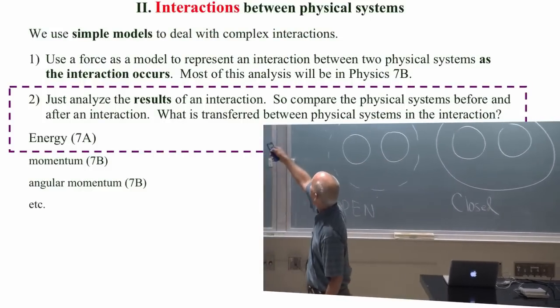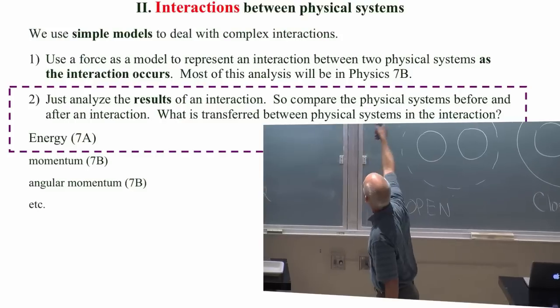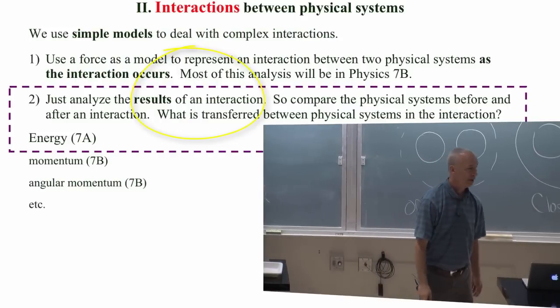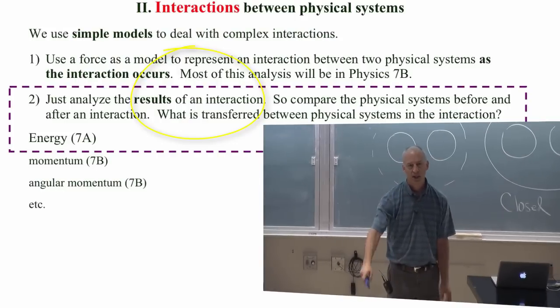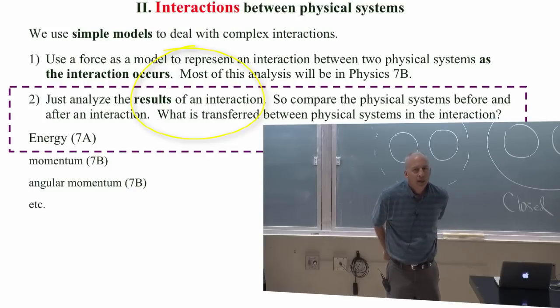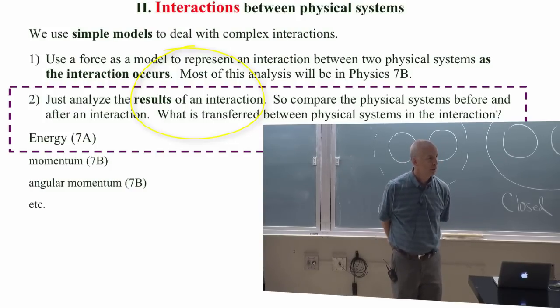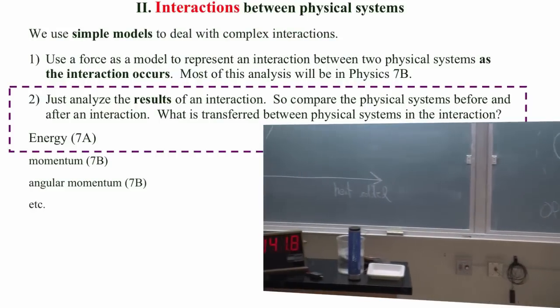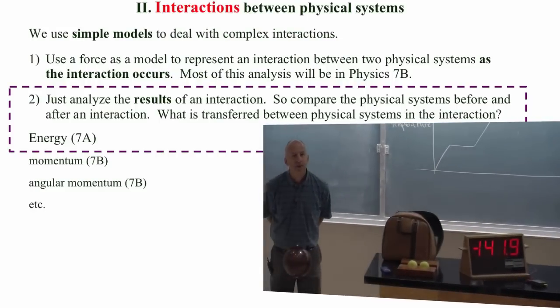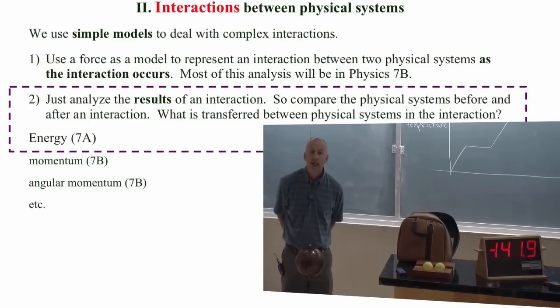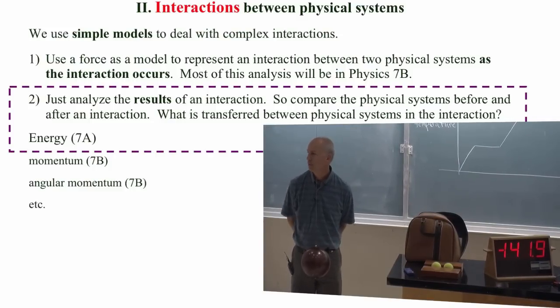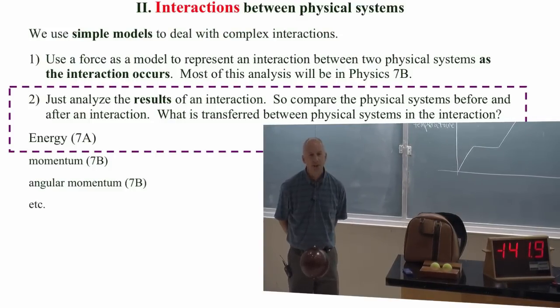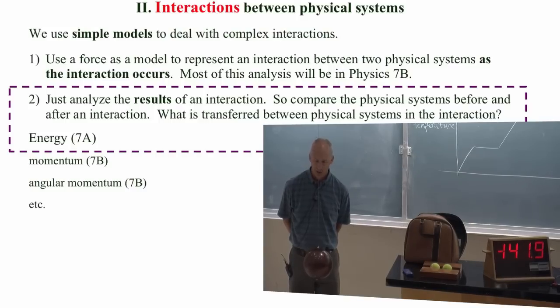So in Physics 7A, what we're going to do is not talk about the interaction so much, but talk about the results of the interaction. Energy can be exchanged. In fact, we're going to talk about that over and over the whole quarter. If I interact with this bowling ball, I can transfer energy to it, and then it'll have more energy and I'll have less. It could go the other way, but right now I'm going to interact with it in a way that transfers energy to it.